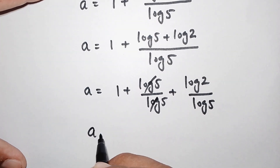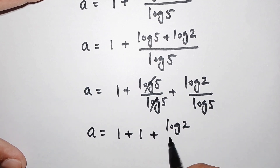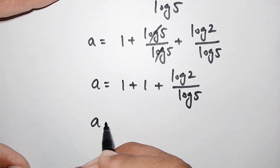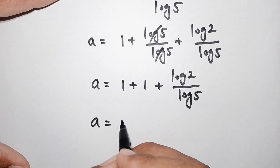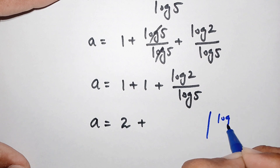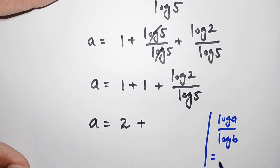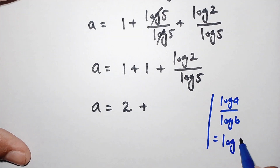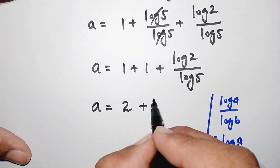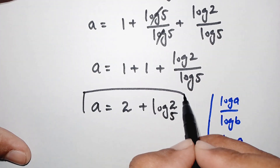So a equals 1 plus (log of 5 plus log of 2) divided by log of 5. This log of 5 cancels with the denominator, leaving 1 plus 1 plus log of 2 over log of 5. Applying the change-of-base rule — log of a divided by log of b equals log of a with base b — this becomes a equals 2 plus log of 2 with base 5.